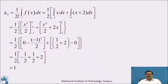Putting the upper limit x=0 gives 0; minus the lower limit x=-1 gives -(-1)²/2 = -1/2. For the second integral, putting x=1 gives 1/2 + 2; minus the lower limit x=0 gives 0. So a₀ = (1/2)[-1/2 + 1/2 + 2] = (1/2)(2) = 1.